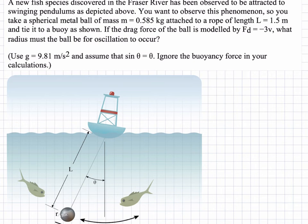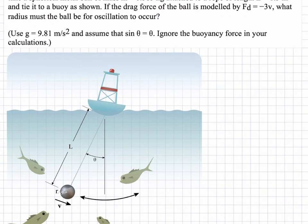We're assuming that g is 9.81 meters per second squared, and we're using a small angle approximation for pendulum. So the angle of oscillation is small.